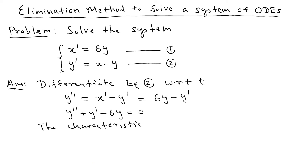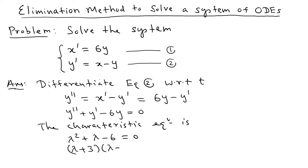The characteristic equation is lambda squared plus lambda minus 6 equals 0, which factors as (lambda plus 3)(lambda minus 2) equals 0. This gives lambda equals negative 3 from the first factor and lambda equals 2 from the second factor.